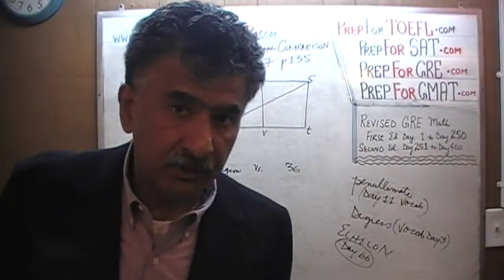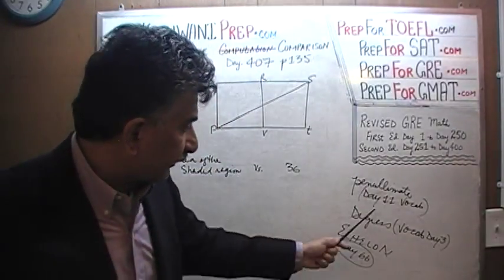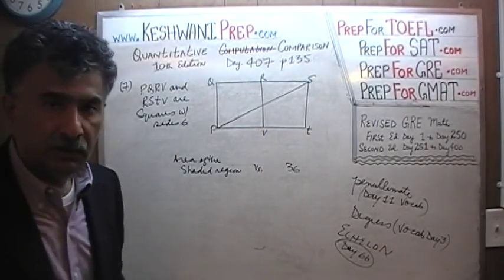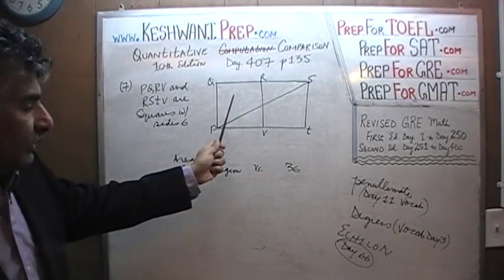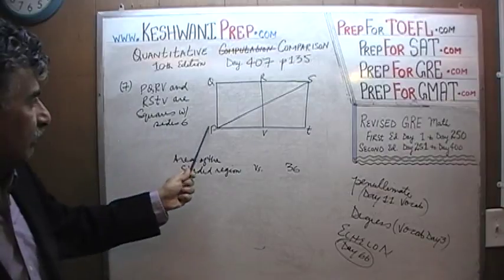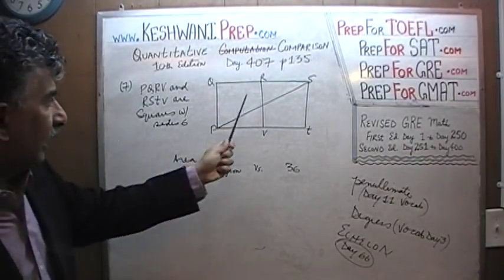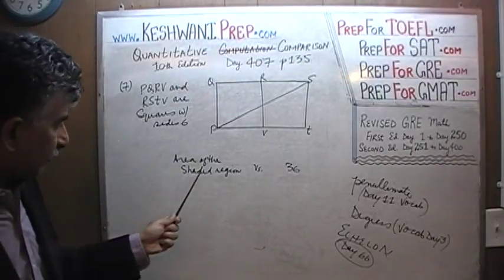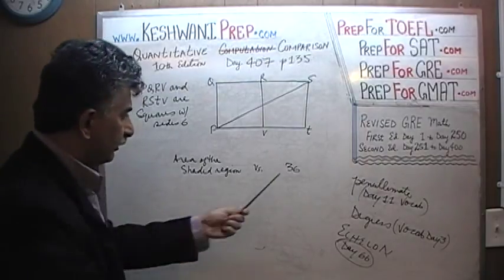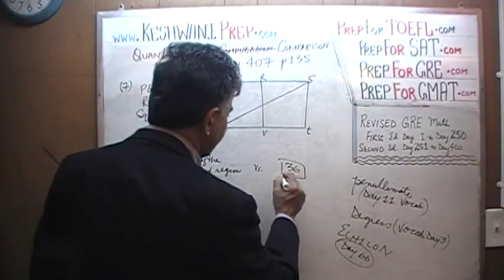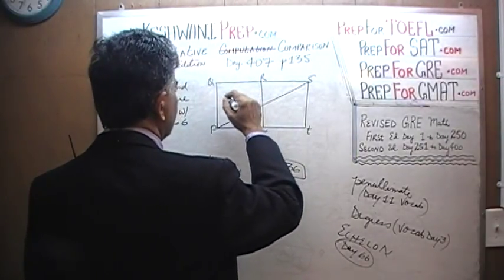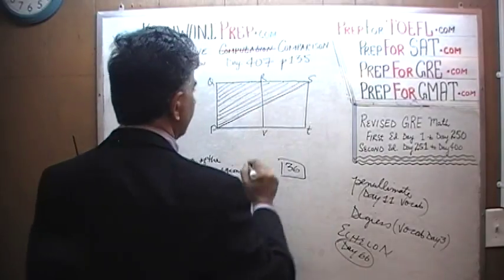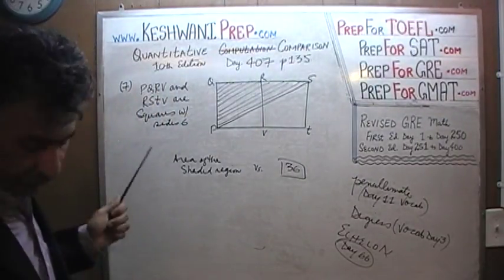Problem number 7 on page 135, the penultimate problem on the page, the second to the last problem. We are given a rectangle PQST, and that rectangle is being cut into halves such that they form equal squares: PQRV and RSTV. We are told R squares with side 6. What we are being asked to compare is the area of the shared region versus 36. Very straightforward, very simple problem, problem number 7.